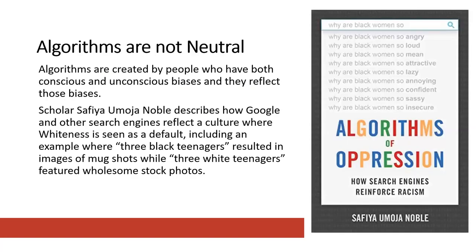A key thing we should think about when we consider how much this algorithm controls what we see and what information is presented to us online, is that algorithms aren't neutral. They sound like they are — this is a piece of computer code, a program that is running. But algorithms are tools. They're created by people. And people have biases — conscious biases and unconscious biases. Therefore, the products that they make share those biases.